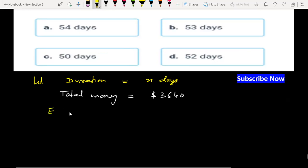So expense for one day equals 3640 upon x. This is one day expense.